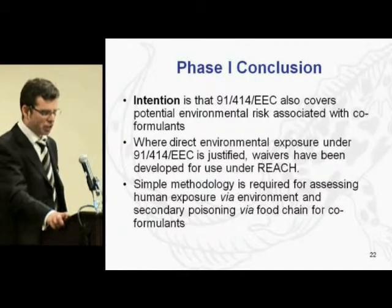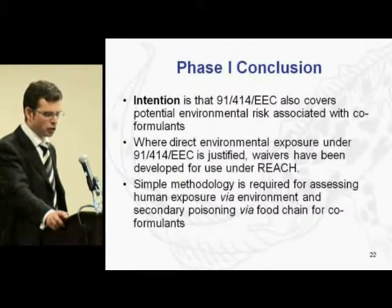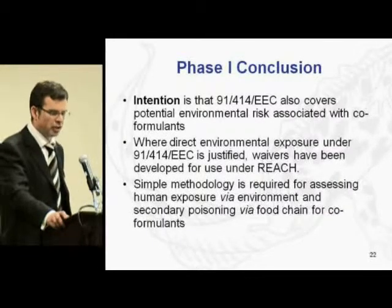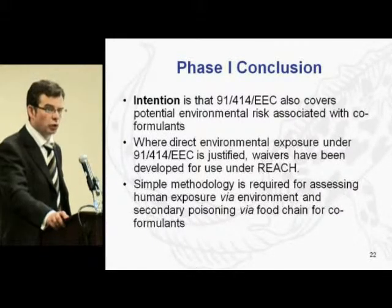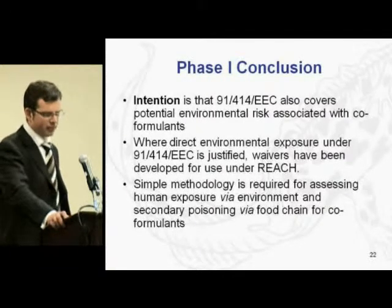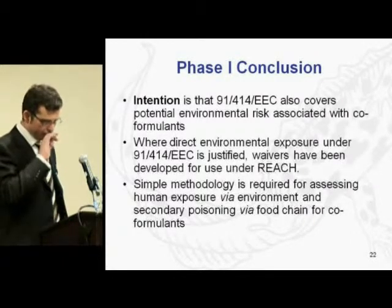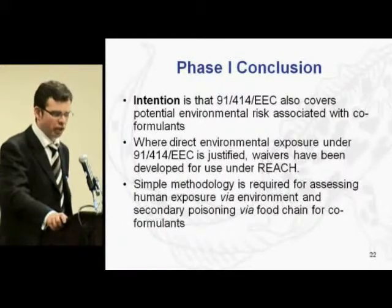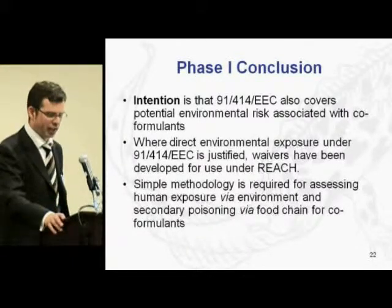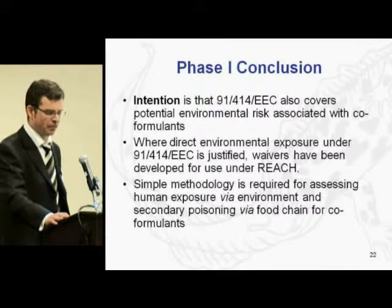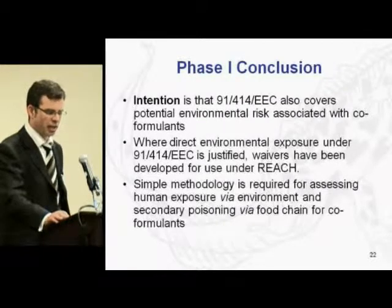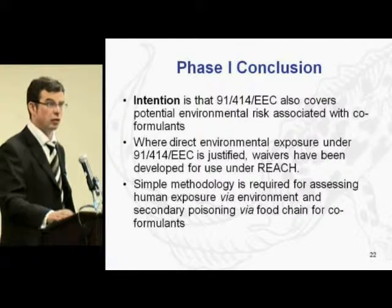This is the end of phase one. Our conclusion was that the 91/414 assessment scheme covers the potential environmental risk associated with coformulants used in crop protection products. As a result, the next step was to develop waivers for use under REACH relating to direct environmental exposure — that is, soil and aquatic exposure. We also concluded that a simple methodology is required for assessing human exposure via the environment and, ideally, secondary poisoning via the food chain for coformulants.